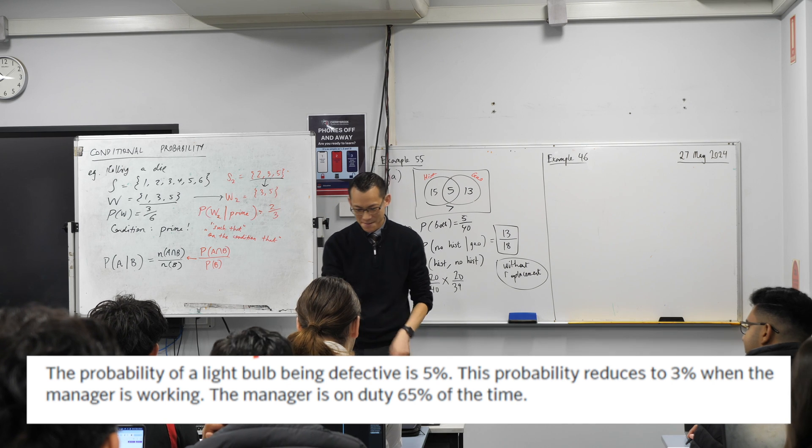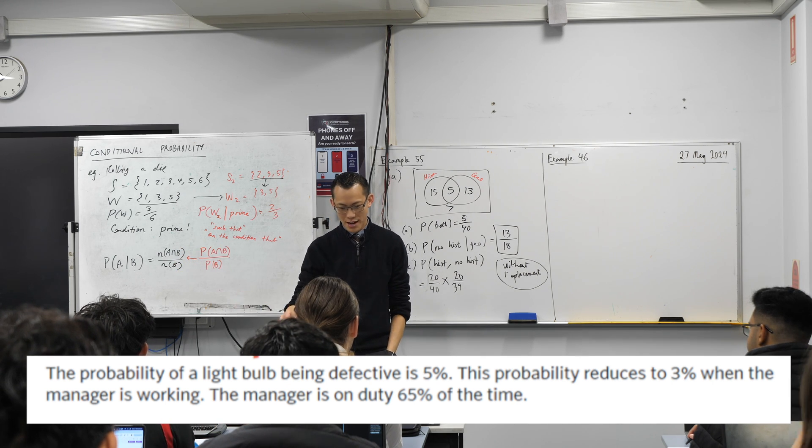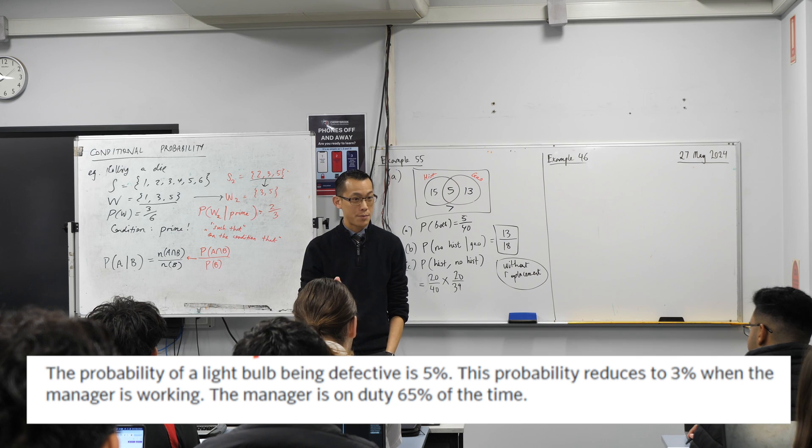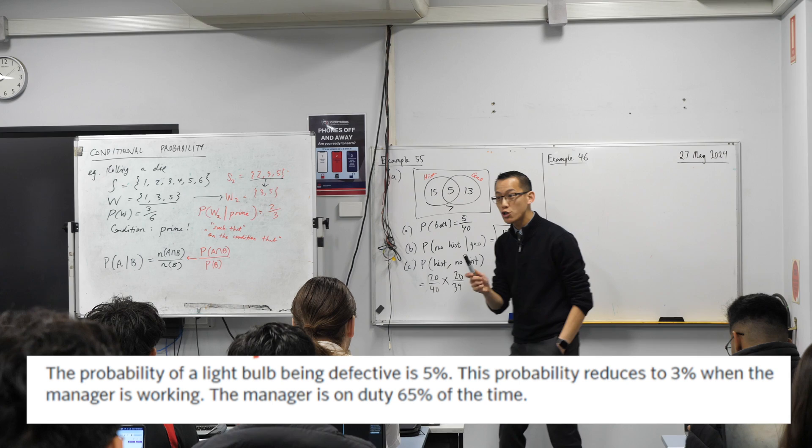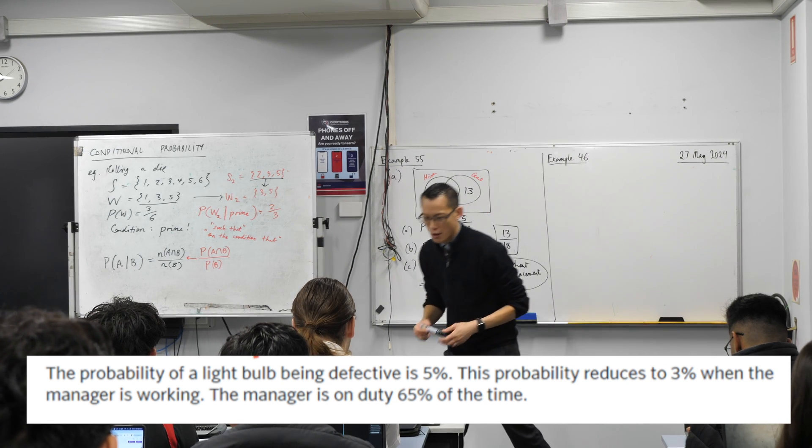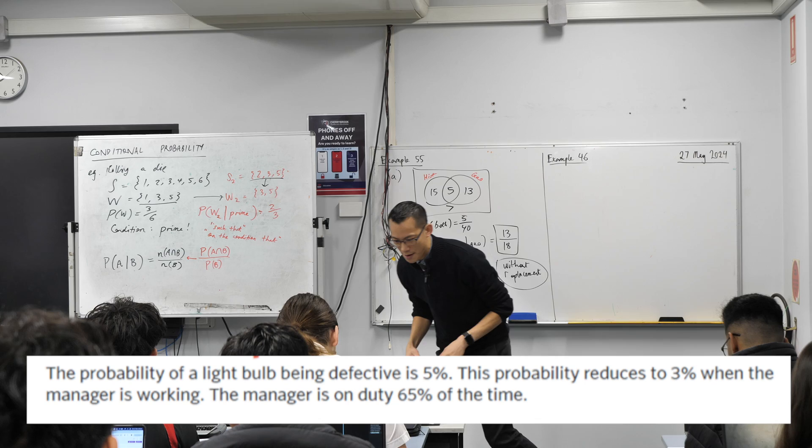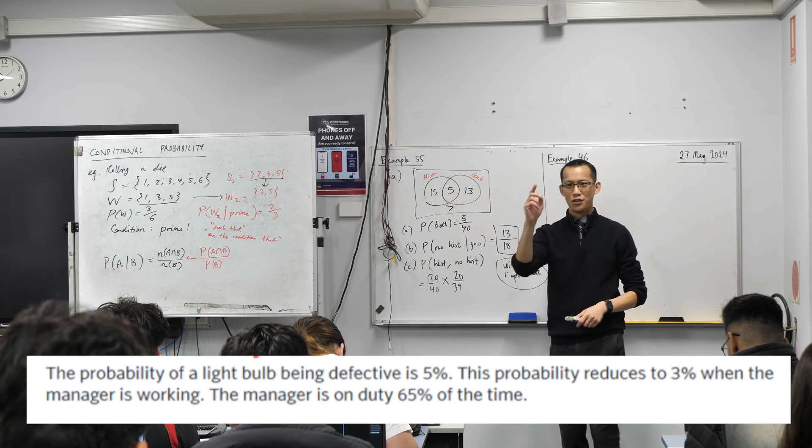The probability of a light bulb being defective is 5%. The probability reduces to 3% when the manager is working, when the manager is wandering around. The manager is not always on duty all the time. They're on duty 65% of the time. I'll read it again and you stop me when you get a bit of information you want to write down.